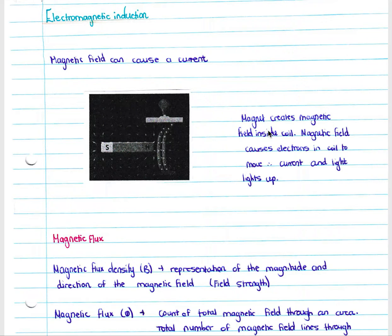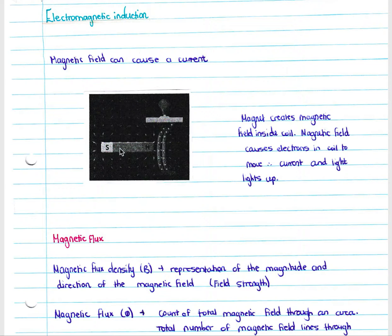Let's have a look at the electromagnetic induction section of the physics syllabus. Thinking back to electromagnetism, we remember that if you had a current carrying conductor with a current flowing, that current would produce a magnetic field around the conductor. Now we look at the fact that a magnetic field can cause a current to move within a conductor. Looking at a diagram where we have a magnet and a coil, the magnet creates a magnetic field inside the coil, causing electrons to move, and therefore current flows in the coil and our light at the top would light up.